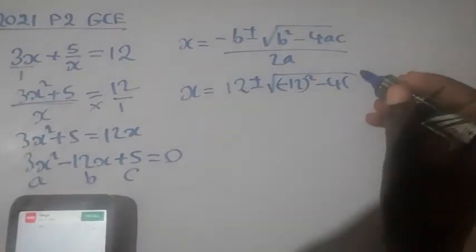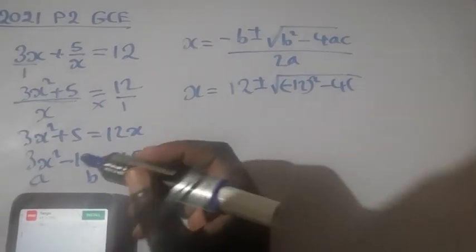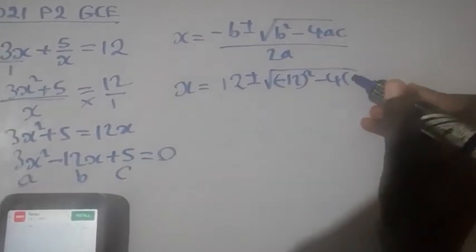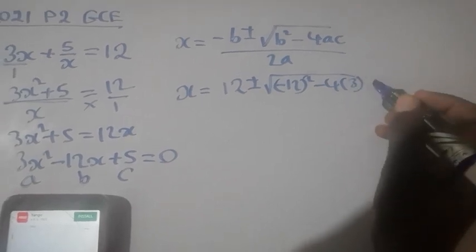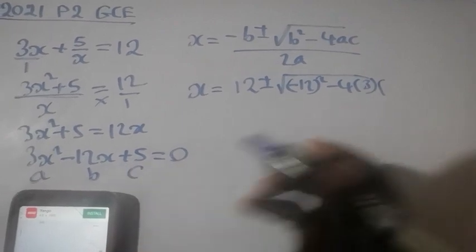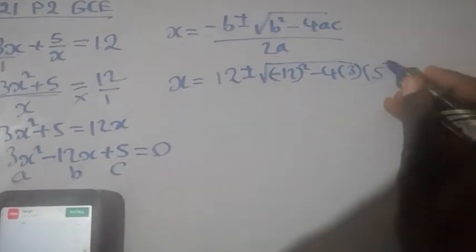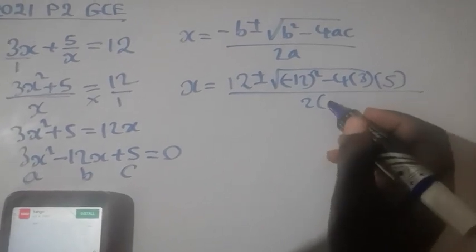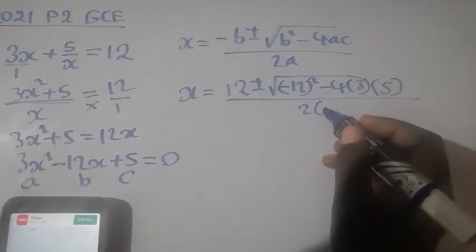Then our A is the coefficient of 3x squared which is 3. Then C we have 5, over 2a we have 3.